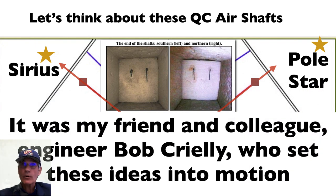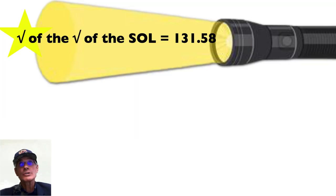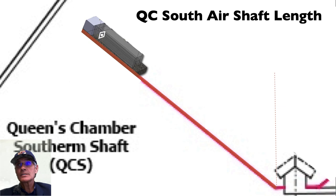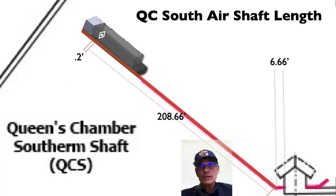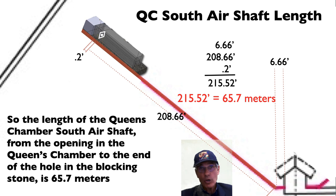So I should say it was my friend and colleague, Engineer Bob Cryley, who set these ideas into motion. And he has the YouTube channel, The Great Pyramid Revelation. So thank you, Bob. So the square root of the square root of the speed of light is 131.58. So that's 65.78 plus 65.78. Which just happens to be the length of the two air shafts. It's incredible. So if you take the horizontal coming out of the Queen's Chamber wall, it's 6.66 feet. And then if you take that jog all the way up to the blocking stone, it's 208.66 feet. And then if you take the length of the blocking stone itself, it's 0.2 feet. So when you add that up, you add those three measures up, you get a distance, a total distance for the shaft of 215.52 feet, which is 65.7 meters. So the length of the Queen's Chamber air shaft from the opening in the Queen's Chamber to the opening into that secret room. And so secret openings at both ends, it's 65.7 meters. This is unbelievable.